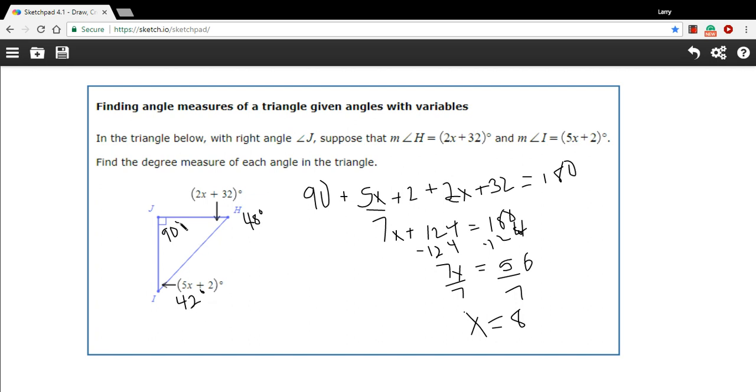And we already had our 90 degrees there. So that's how to find the angle measures in a triangle where they're giving algebraic expressions for some of the angles.